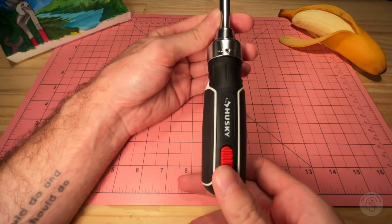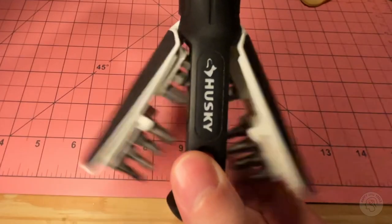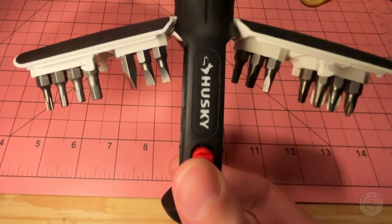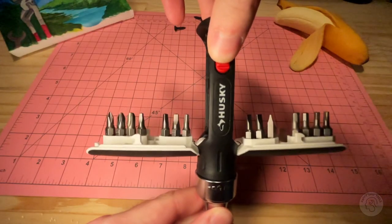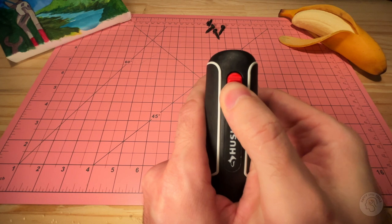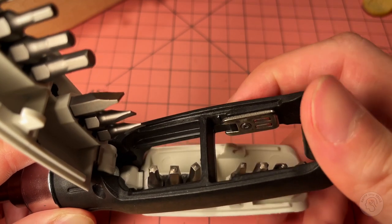Husky made a ratcheting screwdriver with DeLorean door style bit storage. So first of all, how do we get into this bit storage? We have this little red button here we slide up and that allows everything to open up.